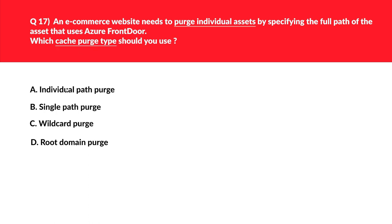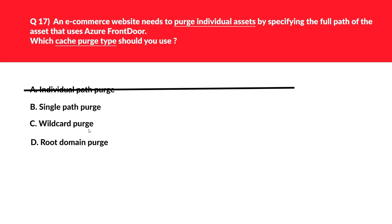This question is about CDN cache purge types. There are only three types: single path, wildcard, and root domain. 'Individual path purge' doesn't exist — it's a distractor — so we reject option A. Option C, wildcard purge, uses an asterisk to purge all folders, subfolders, and files under an endpoint using slash-asterisk in the path. Since the question doesn't mention an asterisk, we reject option C.